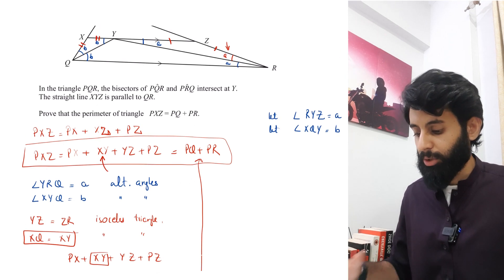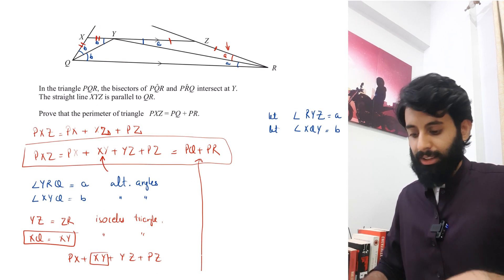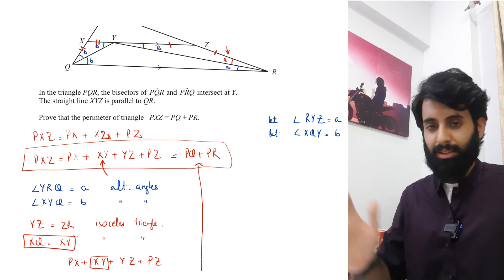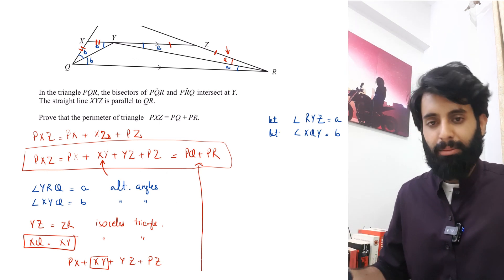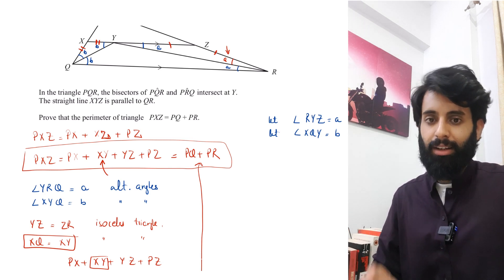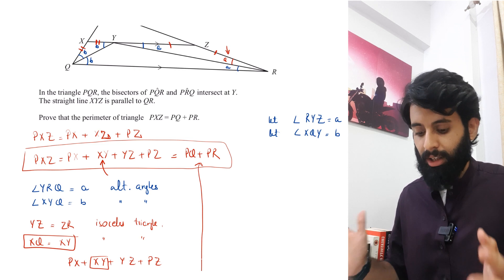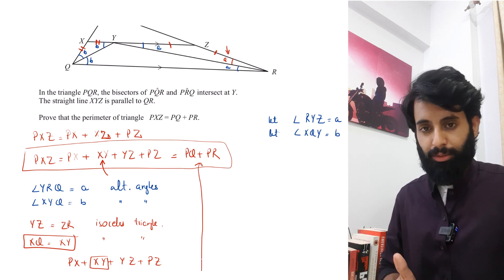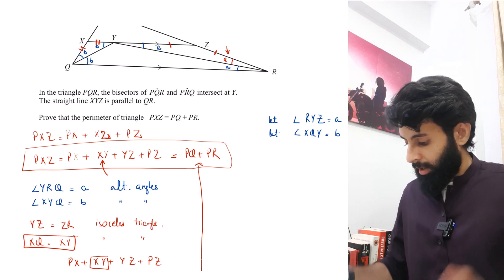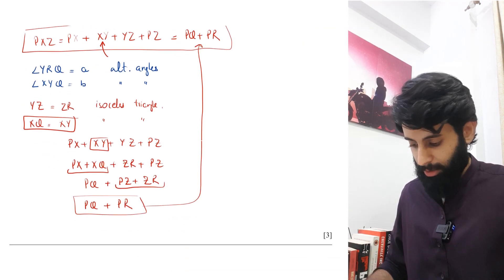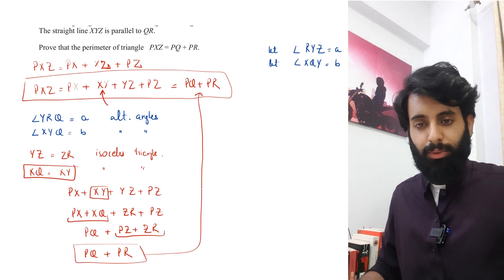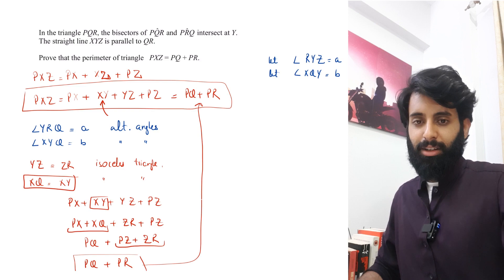Whenever you have a question where no values are given, be very clear when expressing angles. Since I didn't want to write angle PYZ over and over again, I named them a and b — and you're allowed to do that as long as you mention it clearly in your working so the examiner knows what a and b refer to. This was quite a comprehensive question. I really hope you've understood it — that's all for this video, see you in the next one, take care, bye.